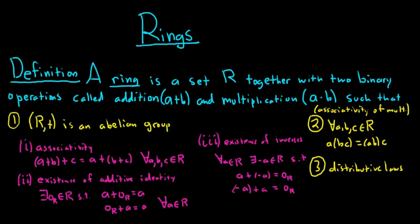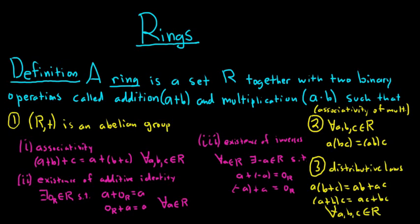The last condition is the distributive laws, which connect the two operations. We have distribution on the left and on the right: a times (b plus c) equals ab plus ac, and (a plus b) times c equals ac plus bc, for all a, b, c in R. So addition and multiplication are connected by these distributive laws — that's what puts them together.